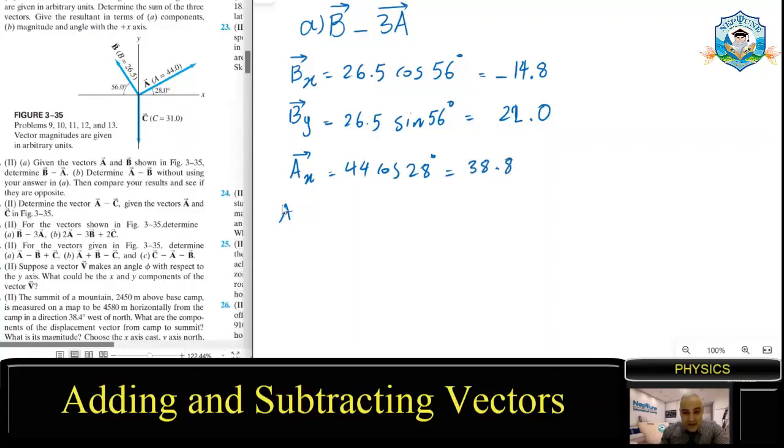And then Ay, that is 44 sine 28°: 20.7. Yeah, okay. Now I've got all the components. Now I should start. I want B minus 3A, so wait, we don't times it first. I'm gonna do it now.